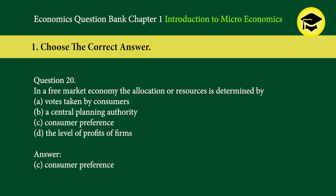Question 20: In a free market economy, the allocation of resources is determined by — A. votes taken by consumers, B. a central planning authority, C. consumer preference, D. the level of profits of firms. Answer: C. Consumer preference.